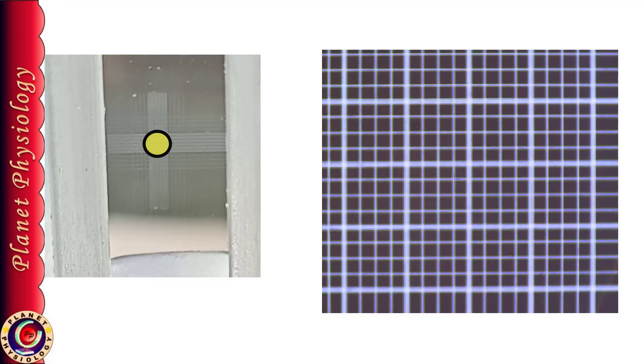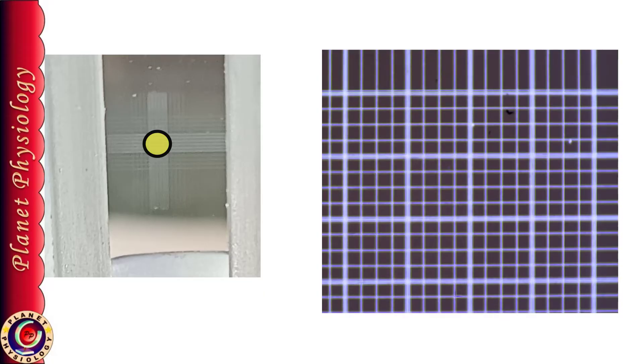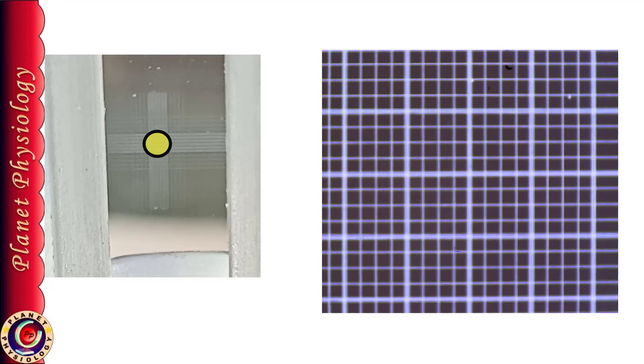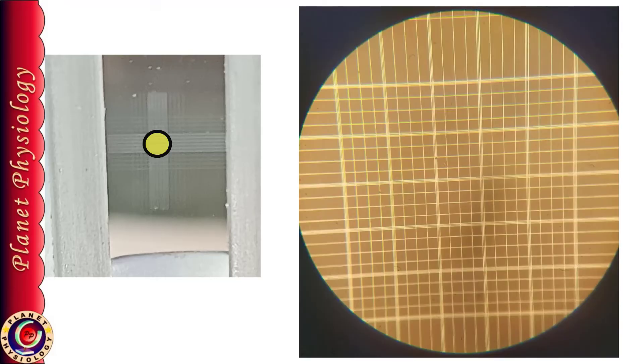Now follow these rectangles till you get small squares. Once you see your entire field is filled with small small small squares that means you have reached to the central RBC square.